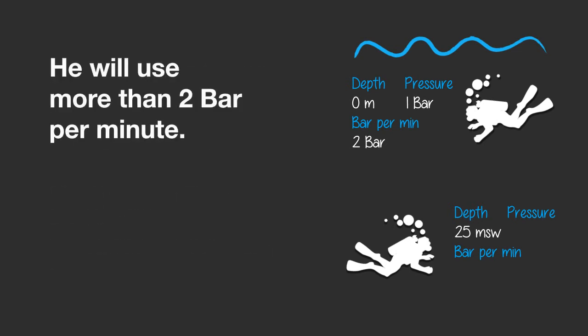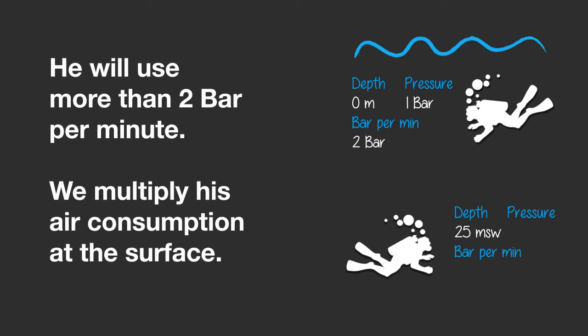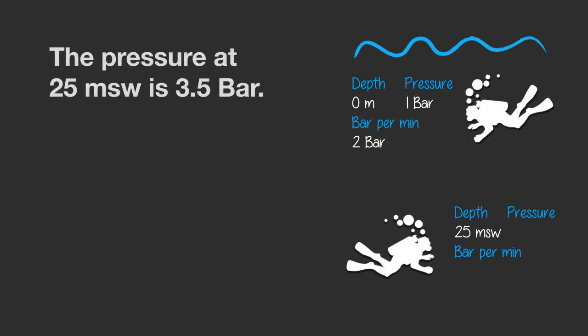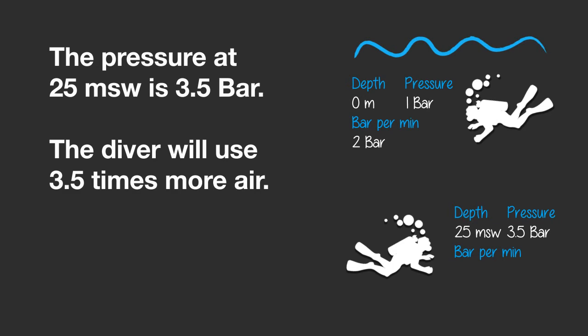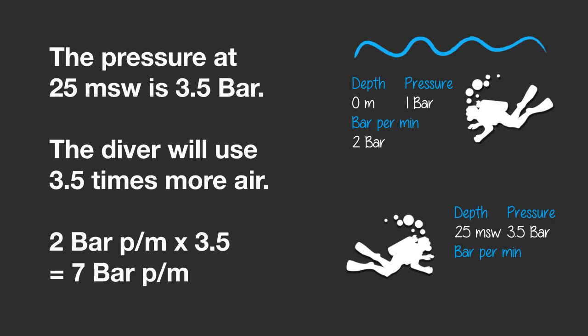First, we know that he will use more than 2 bar per minute, not less. So we need to multiply his air consumption at the surface. The pressure at 25 metres of seawater is 3.5 bar — 25 divided by 10, plus 1. The diver will use 3.5 times more air at 25 metres. 2 bar multiplied by 3.5 is 7 bar, so he will use 7 bar per minute at 25 metres of seawater.